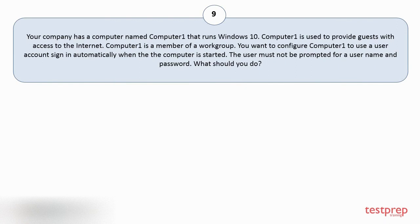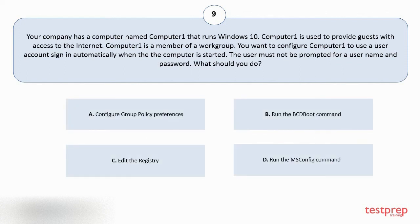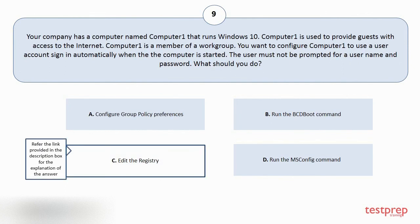Question number nine. Your company has a computer named Computer1 that runs Windows 10. Computer1 is used to provide guests with access to the internet. Computer1 is a member of a workgroup. You want to configure Computer1 to use a user account sign-in automatically when the computer is started. The user must not be prompted for a username and password. What should you do? Options: A. Configure group policy preferences. B. Run the bcdboot command. C. Edit the registry. D. Run the msconfig command. The correct answer is option C.